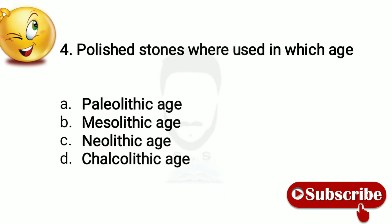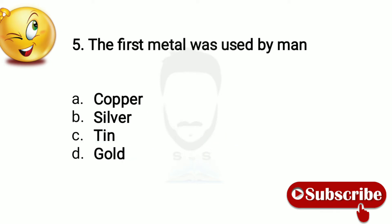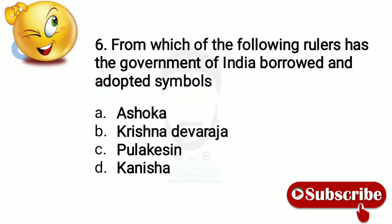Question 4: Polished stones were used in which age? The answer is Neolithic age. Question 5: First metal used by man — which is copper. Question 6: From which of the following rulers has the Government of India borrowed and adopted symbols? Option number A, Ashoka.